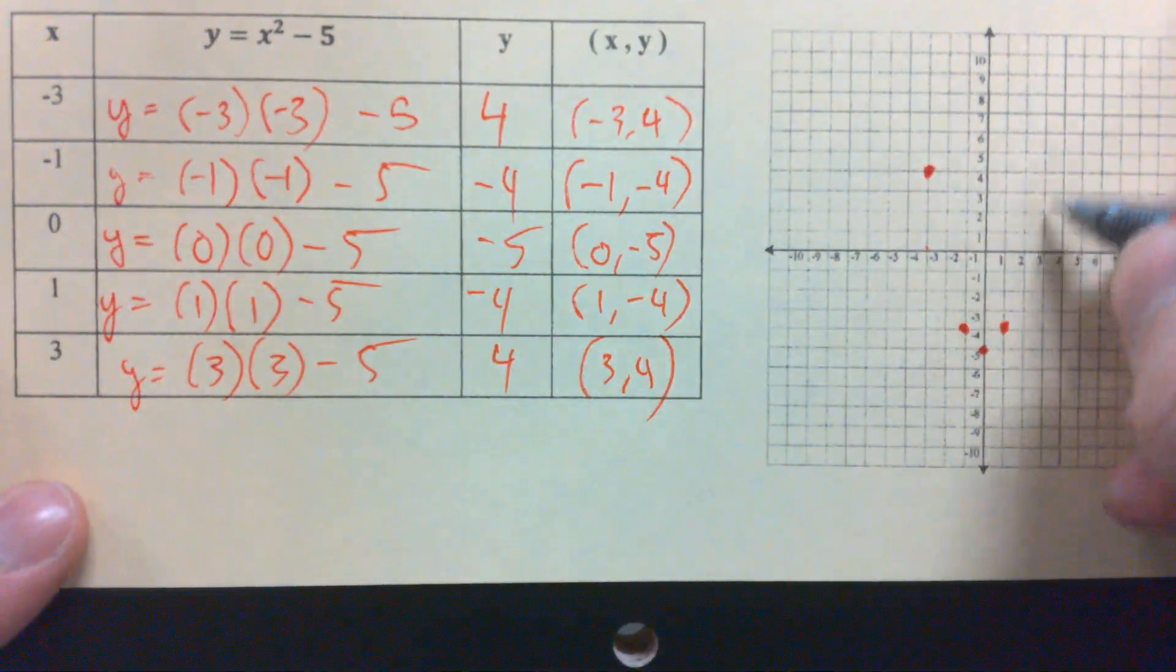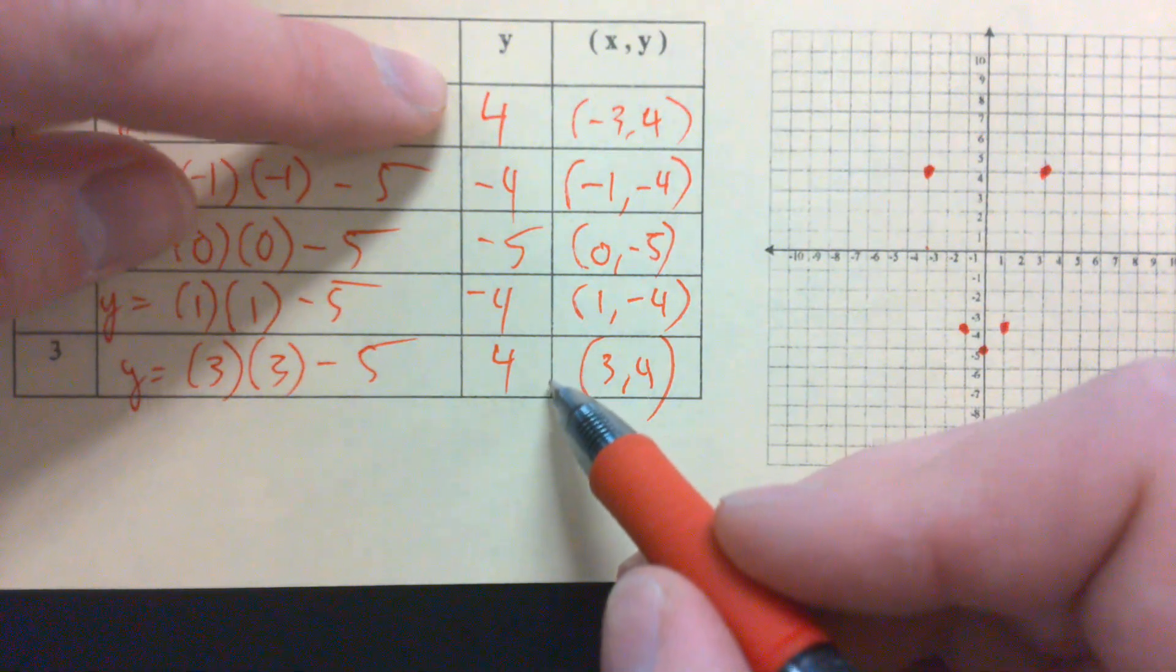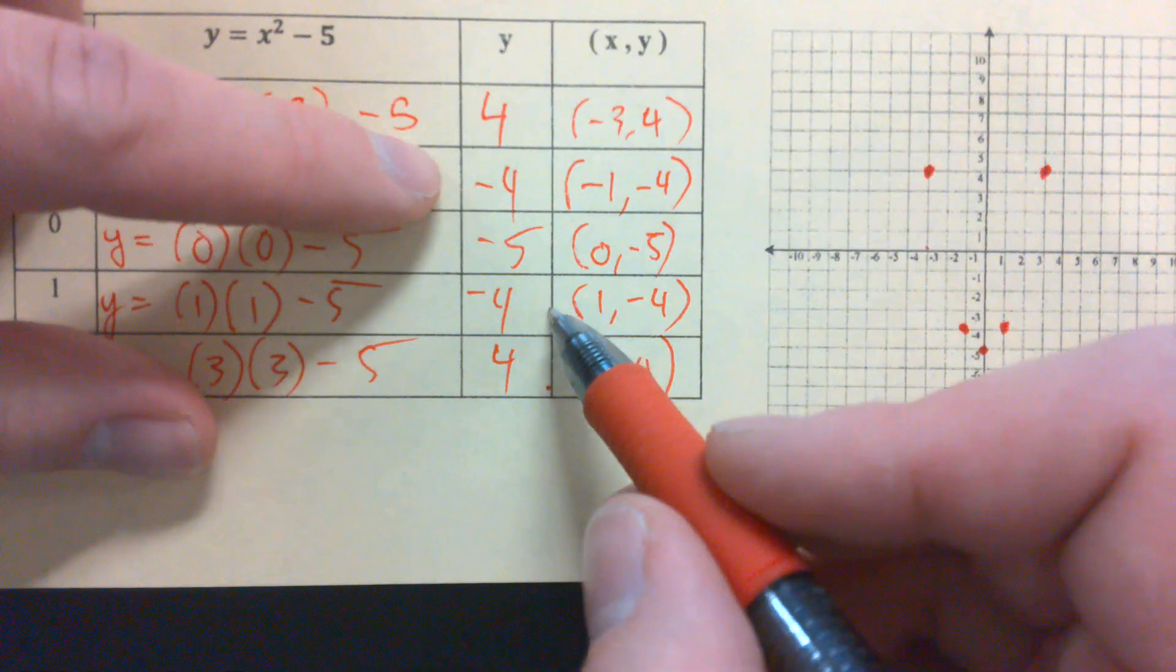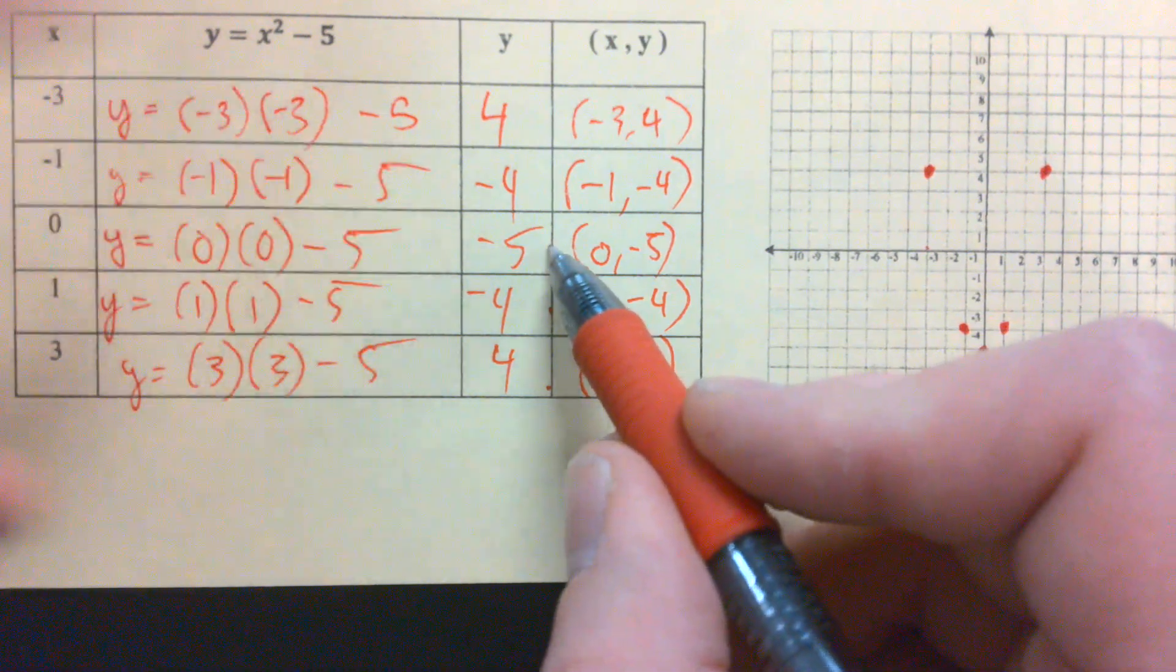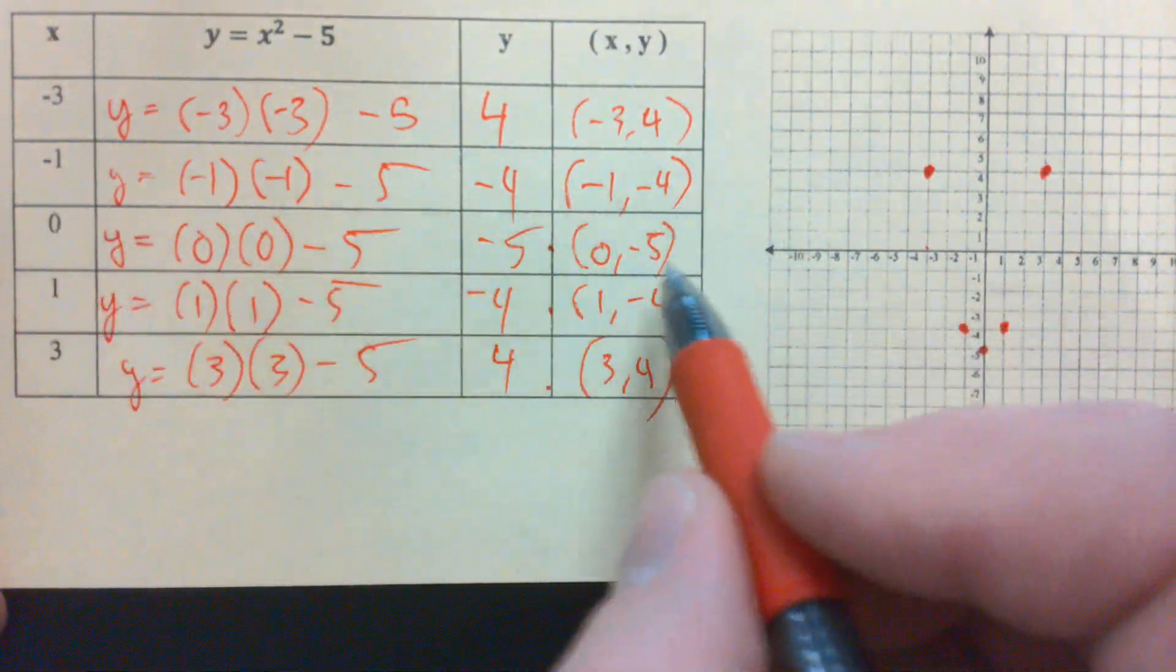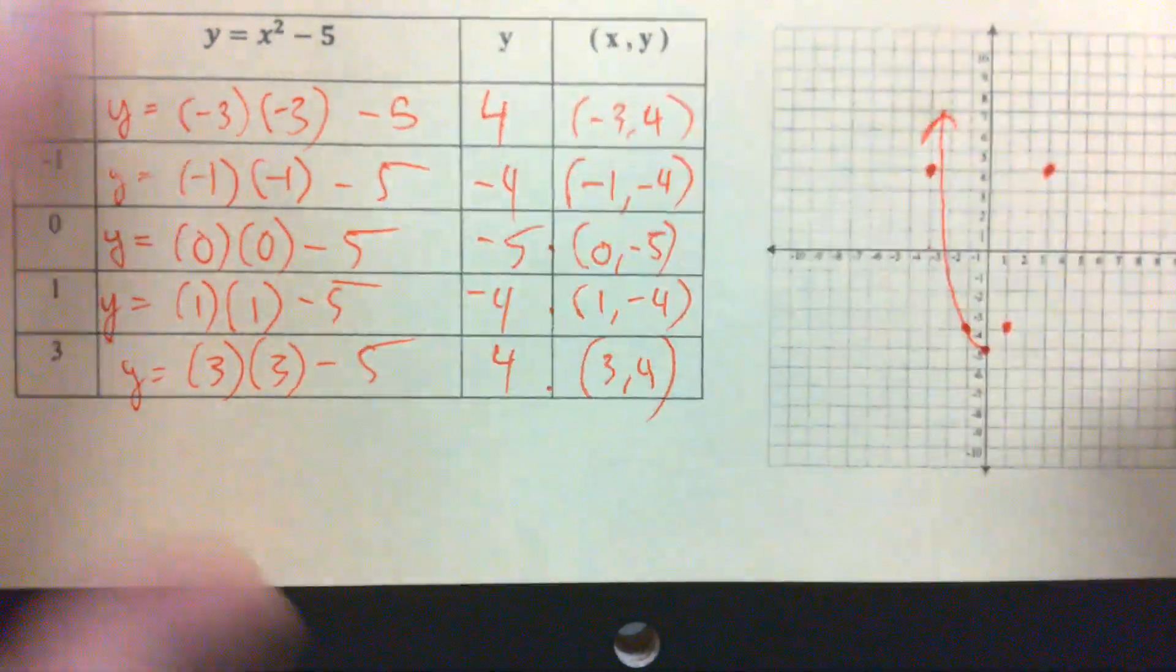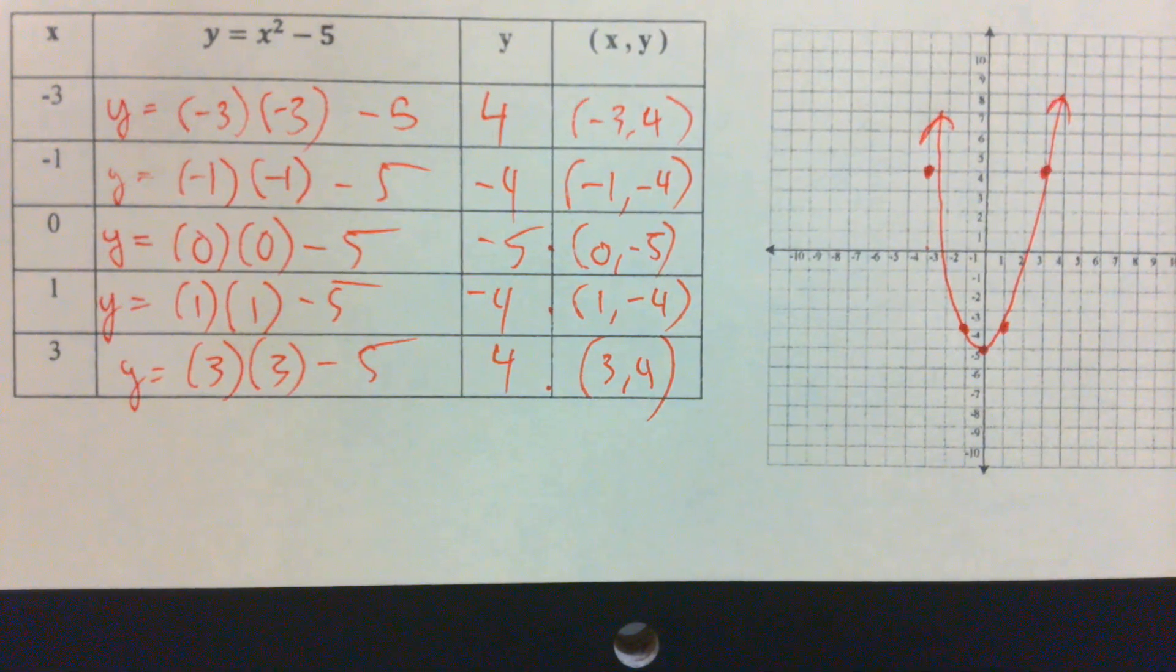Whenever we have these parabolas or these non-linear functions, our first and last outputs will be the same. Our second and second-to-last outputs will be the same. And our y-intercept at 0 in the middle will be its own output. We can draw our parabola just like that. Oops, missed the point, but whatever. And there it is, something like that. Better looking than mine, hopefully.